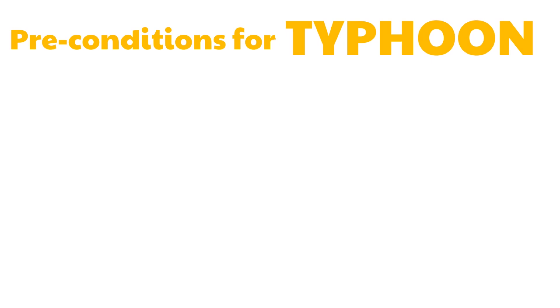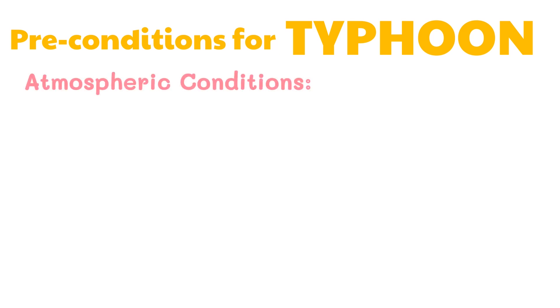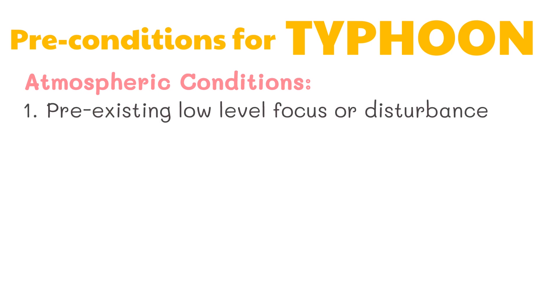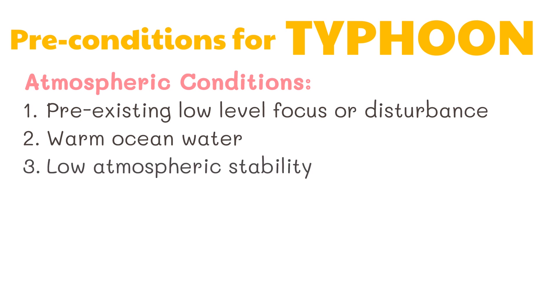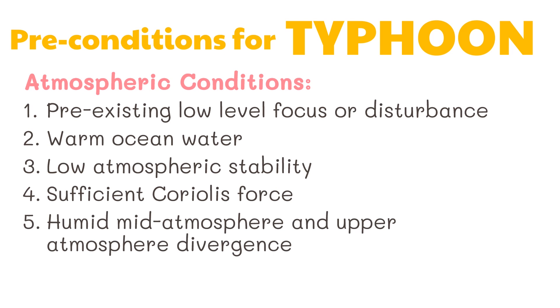Several atmospheric ingredients must come together to favor the formation of a typhoon. These atmospheric conditions, if met, could cause a typhoon to form: a pre-existing low-level focus or disturbance, warm ocean water, low atmospheric stability, sufficient Coriolis force, a humid mid-atmosphere, and upper atmosphere divergence are all important factors for typhoon formation.